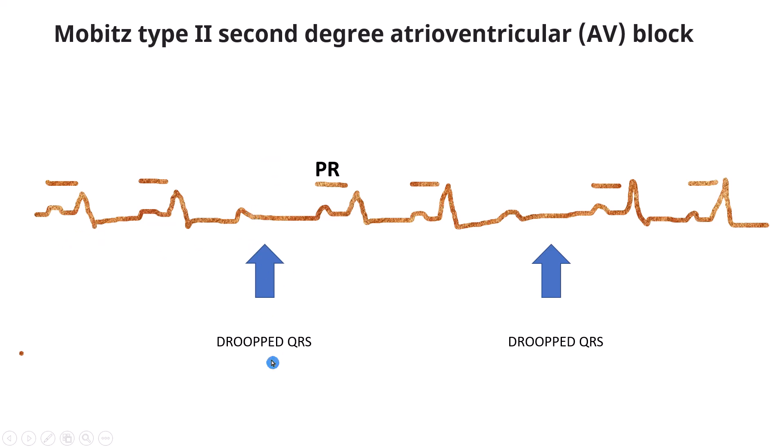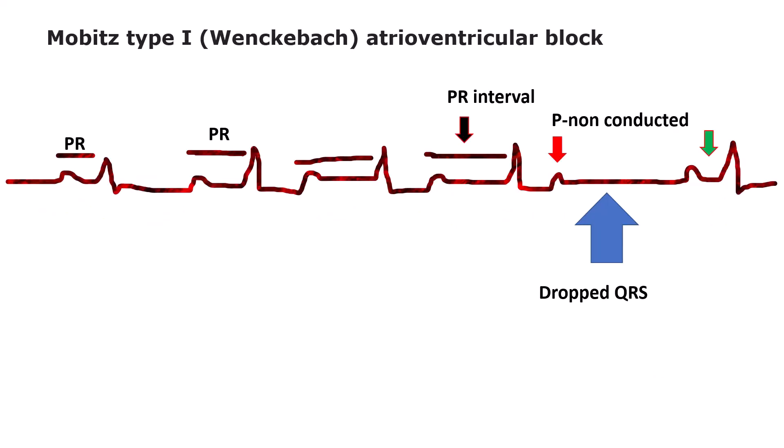The nomenclature is based on the ratio of the number of P waves to QRS complexes in a given cycle. The number of P waves is always one higher than the number of QRS complexes. In many cases, just two or three conducted P waves are seen before one is not conducted, like 3 to 2. In other cases, longer cycles are seen. Wenckebach cycle also produces a distinct clustering of QRS complexes separated by a pause, the dropped QRS.